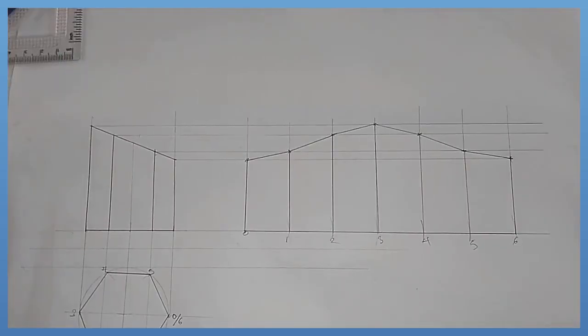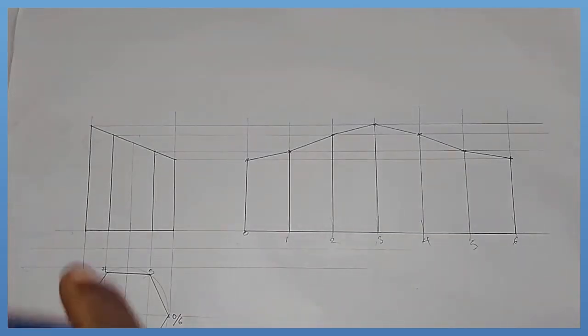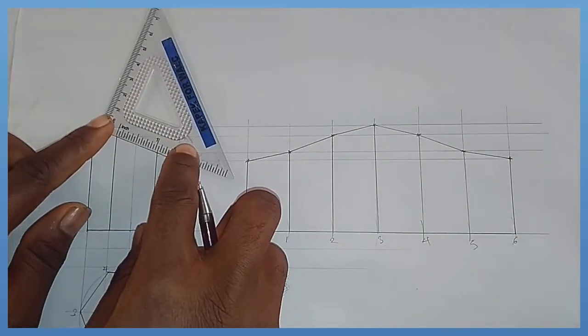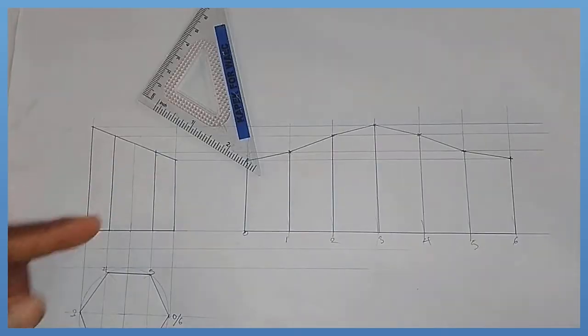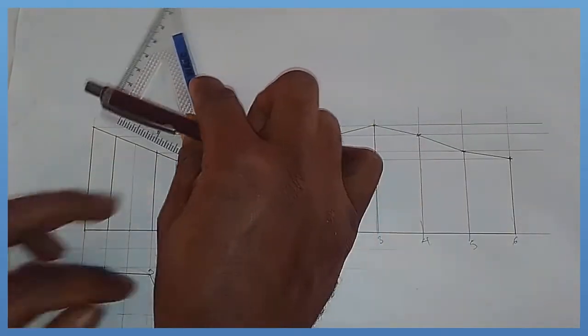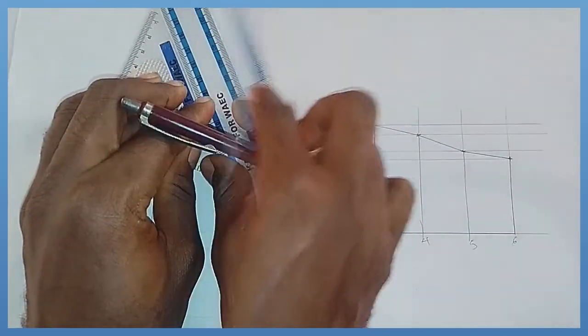To draw the true shape of the section of a hexagonal prism, what you are going to do is ensure that every line you project from each of the points here are perpendicular to this line. Take note of that.